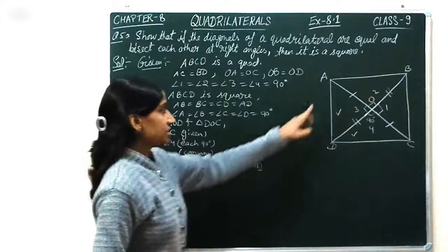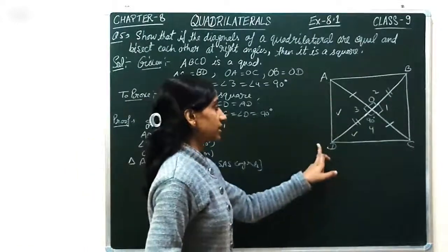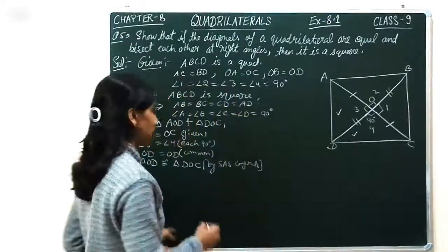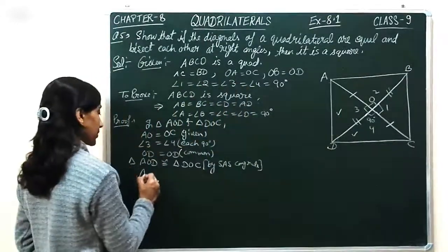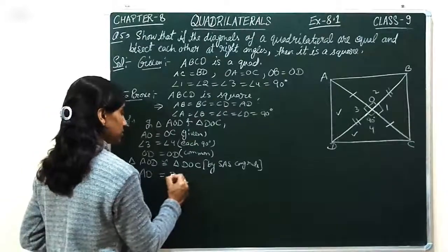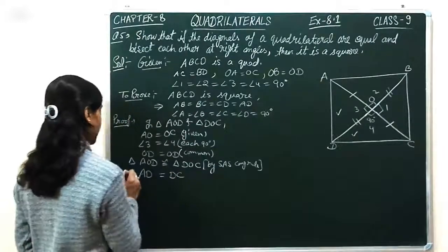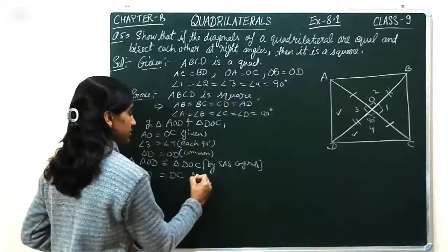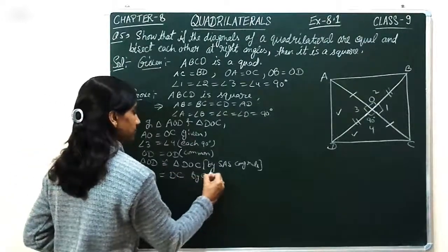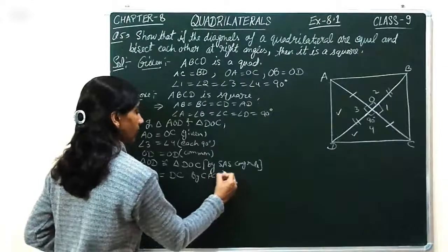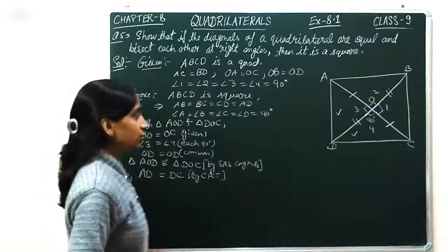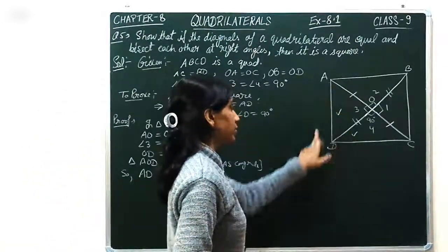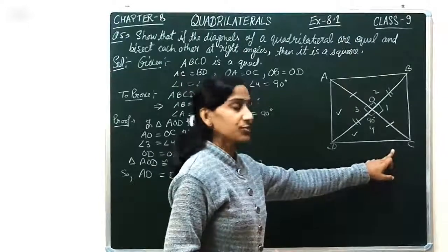By CPCT, we can prove that AD is equal to DC. Similarly, if we take the other pairs of triangles and apply the same congruence rule, we can show CD equals BC.